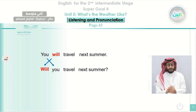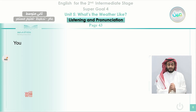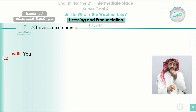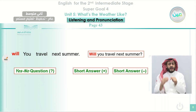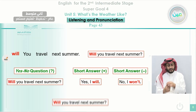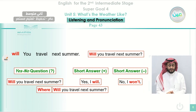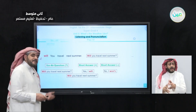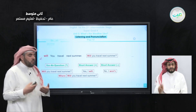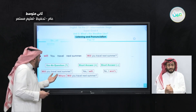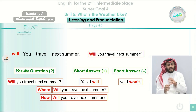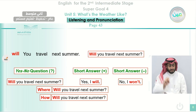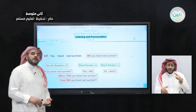For information questions using WH words, you simply add the question word at the beginning. For example, 'Where will you travel next summer?' asks about a place. 'How will you travel next summer?' asks about the means — maybe by plane, maybe by car. 'Why will you travel next summer?' asks about a reason. These WH question words — where, how, why — are added before the inverted question structure.